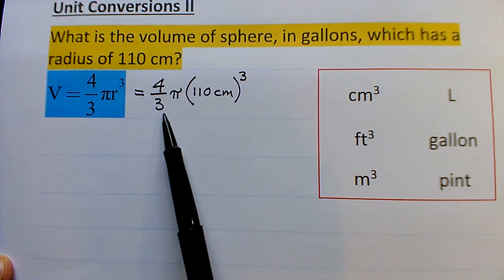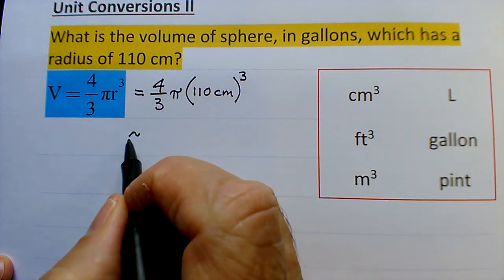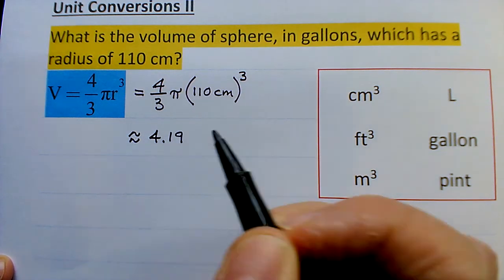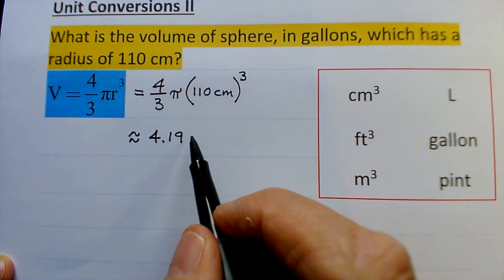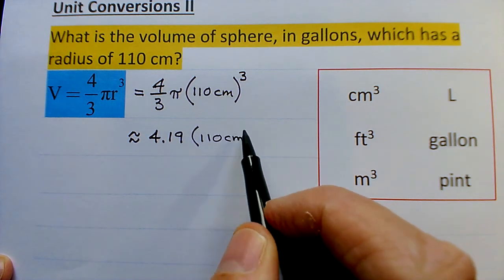The other thing I give to my students is that 4/3 π is approximately 4.19. For high school physics, that's a very decent approximation to use.